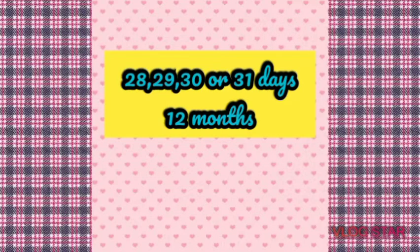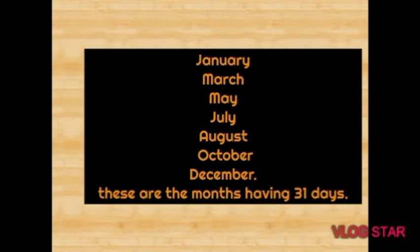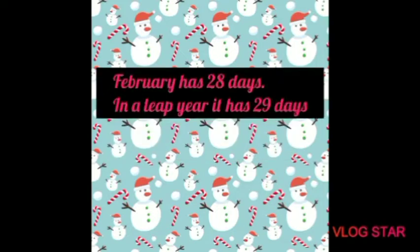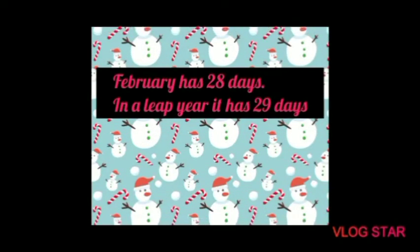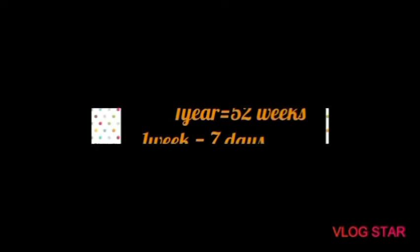A month has 28, 29, 30, or 31 days, and there are 12 months in the calendar. The months with 31 days are January, March, May, July, August, October and December. The months with 30 days are April, June, September and November. February has 28 days, and in a leap year it has 29 days.